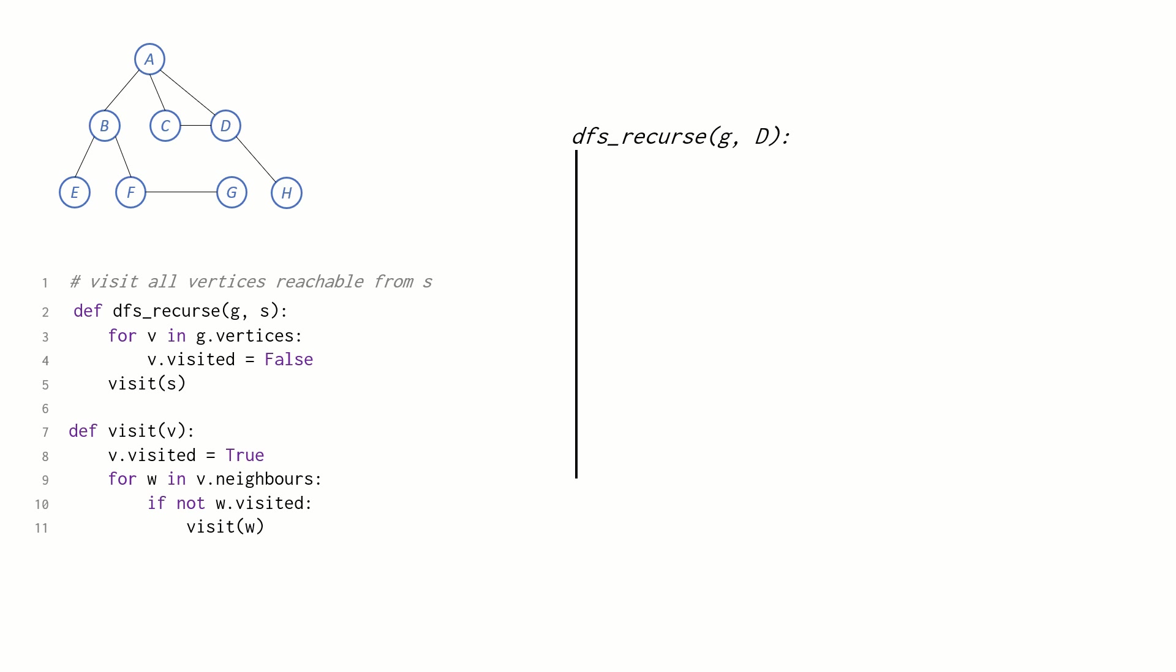First, we call DFS recurse on the graph G at start vertex D. This vertical line here means everything I'm going to write down next is happening inside this call to DFS recurse. First thing we do is iterate through the vertices in lines 3 to 4, and I'm not going to bother to write that down because it's just a simple for loop. Next, line 5, we call visit on D, and the blue line here marks everything we're doing inside our call to visit D. First, we mark D as visited on line 8. Then we get a list of D's neighbours and we go through them. The first neighbour is H.